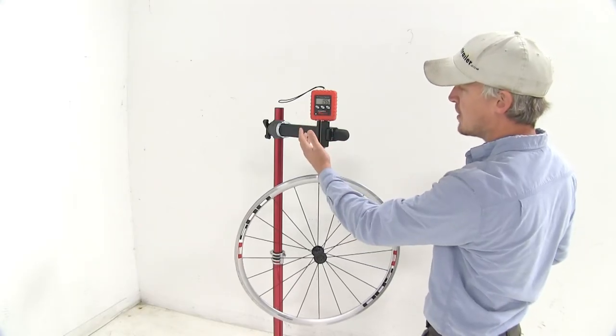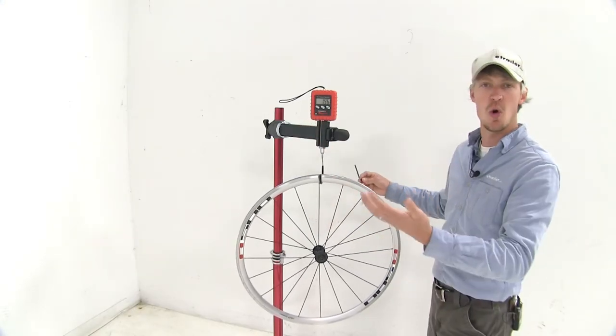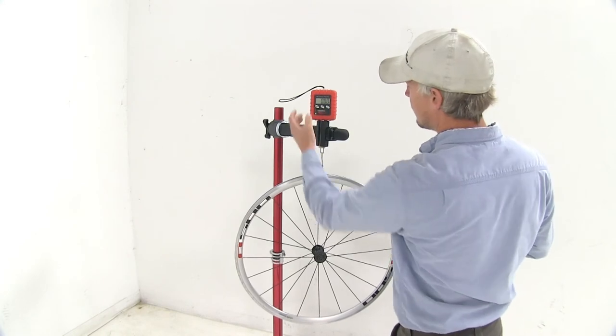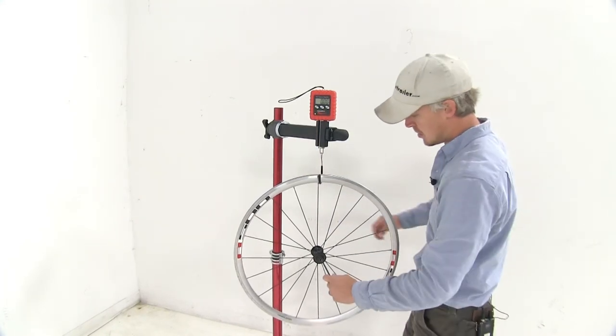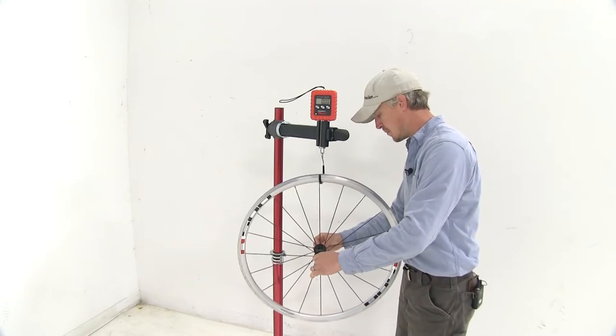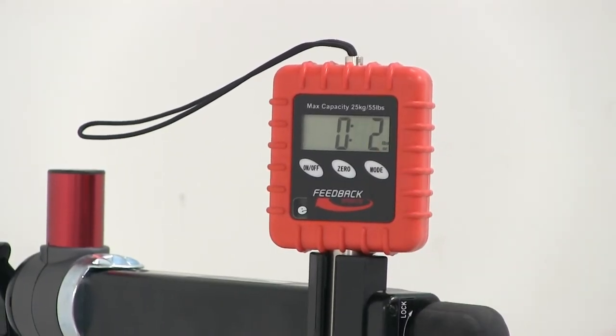It features a zero or tear button, so we can see how much weight we've added or subtracted. I'll zero it out, and then I'll add my skewer. This way I can see my skewer weighs 2 ounces.